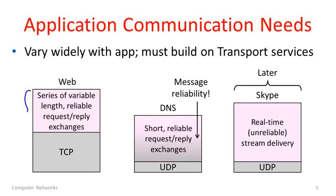On the left we have the web. The real communication pattern needed for the web is a series of variable-length and reliably transferred request-reply interactions — where you fetch a web resource, typically many times, to build a web page. This communication pattern is going to be built on top of TCP, which already gives us reliability and variable-length messages as part of its byte stream. So we'll need to build a series of request-reply interactions on top of it.